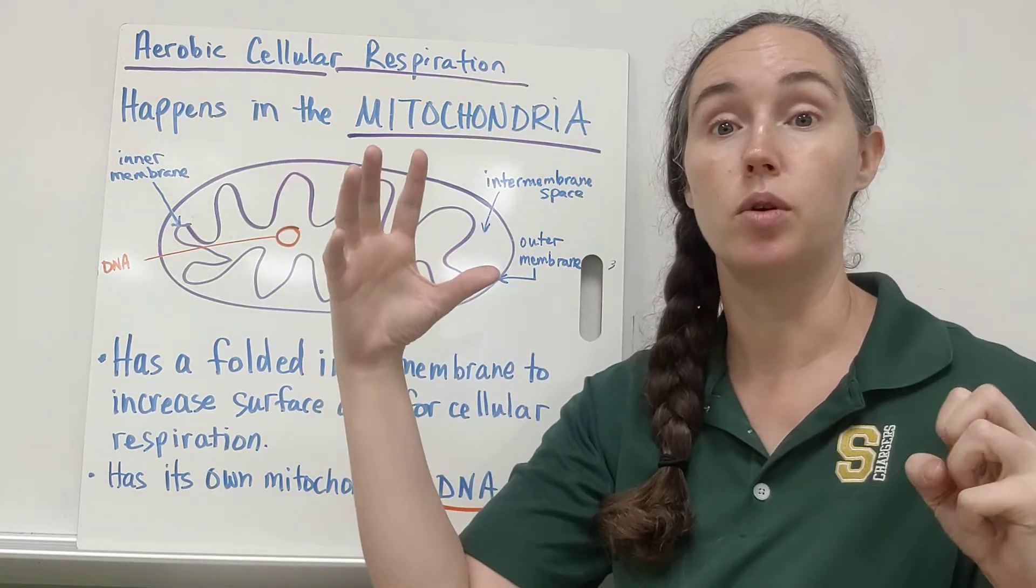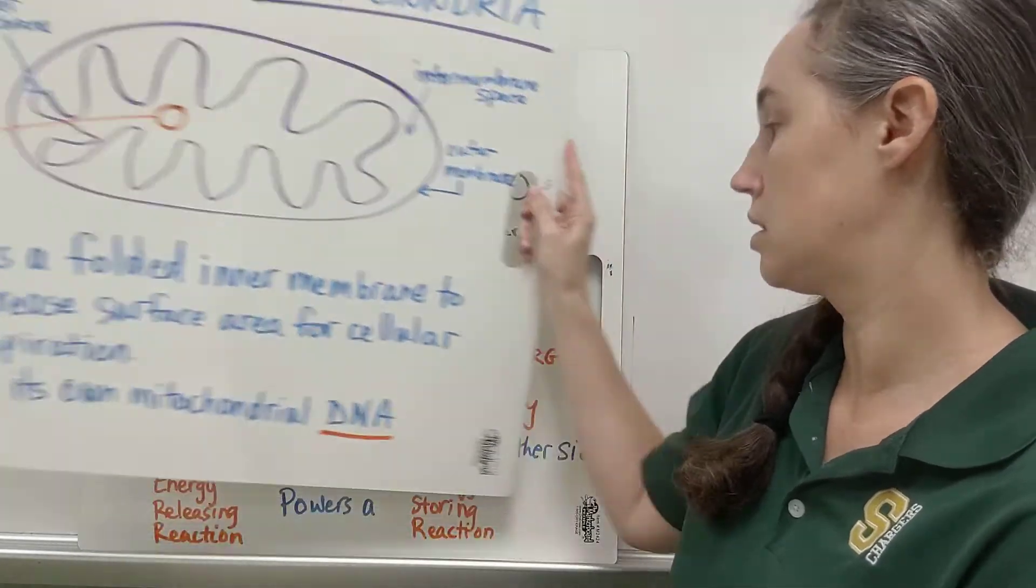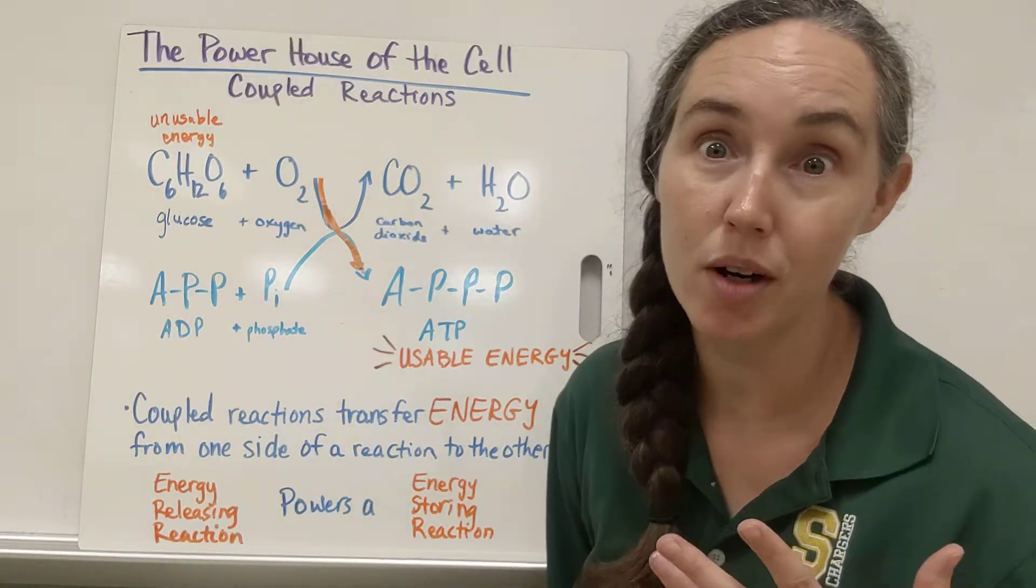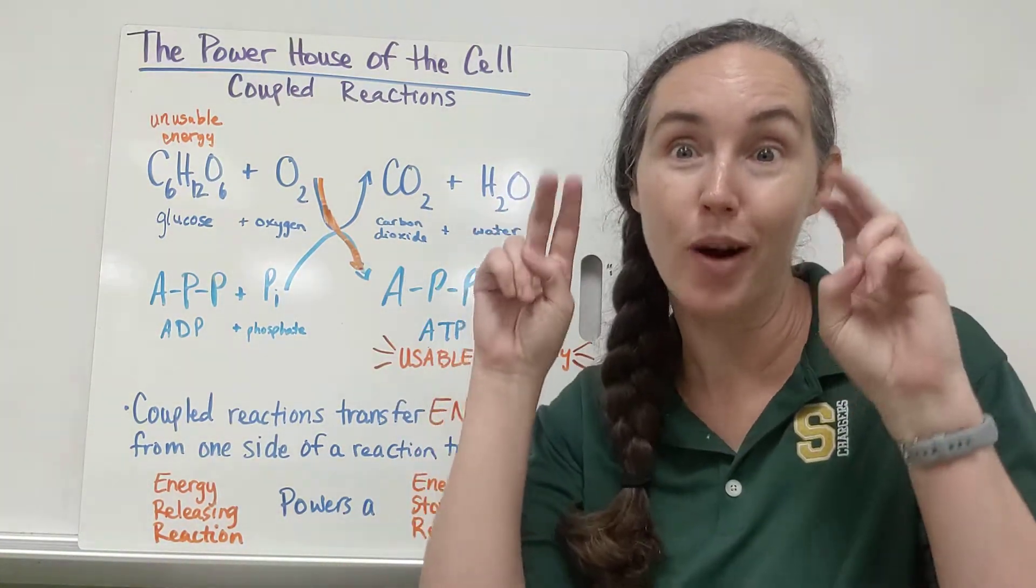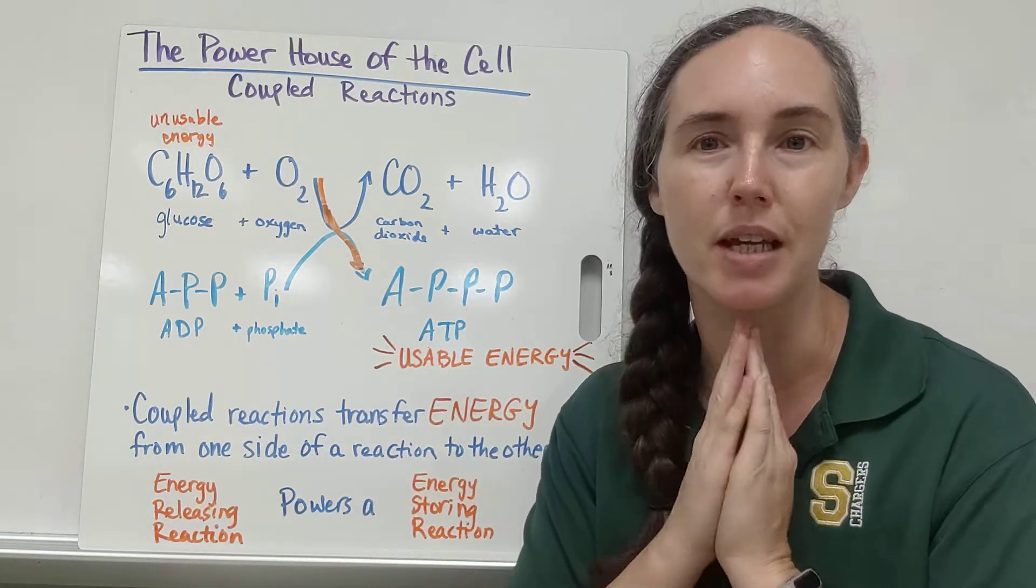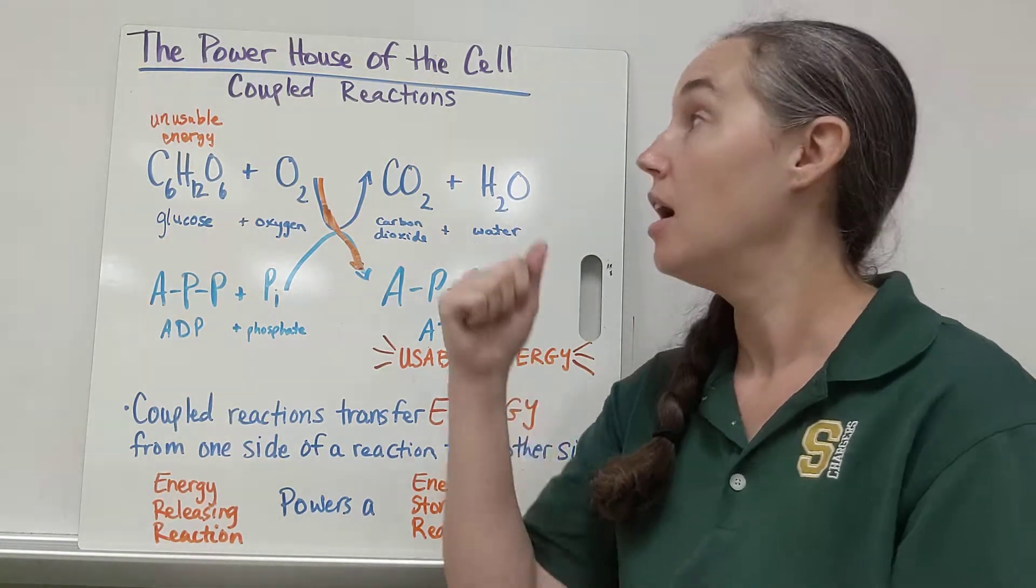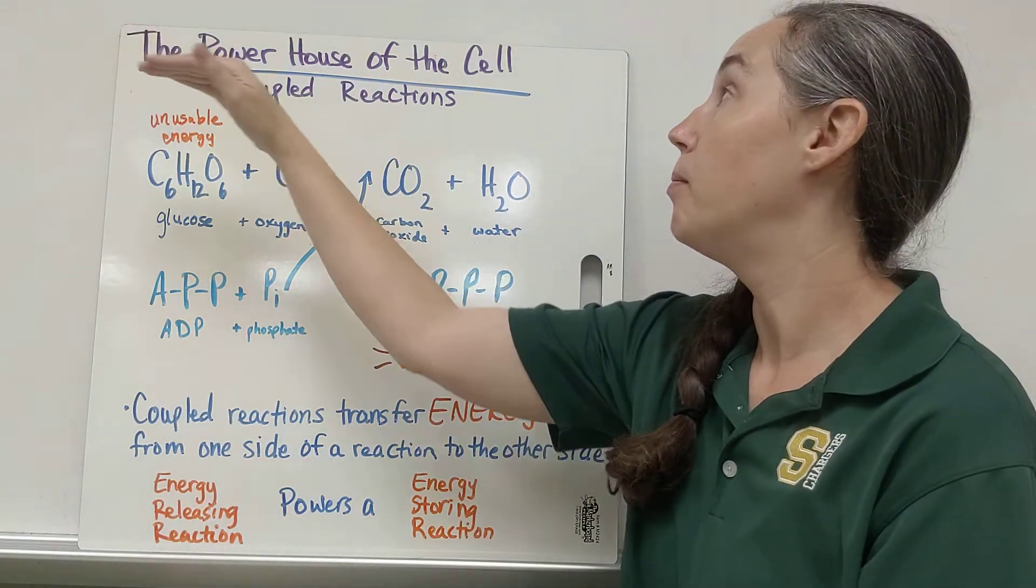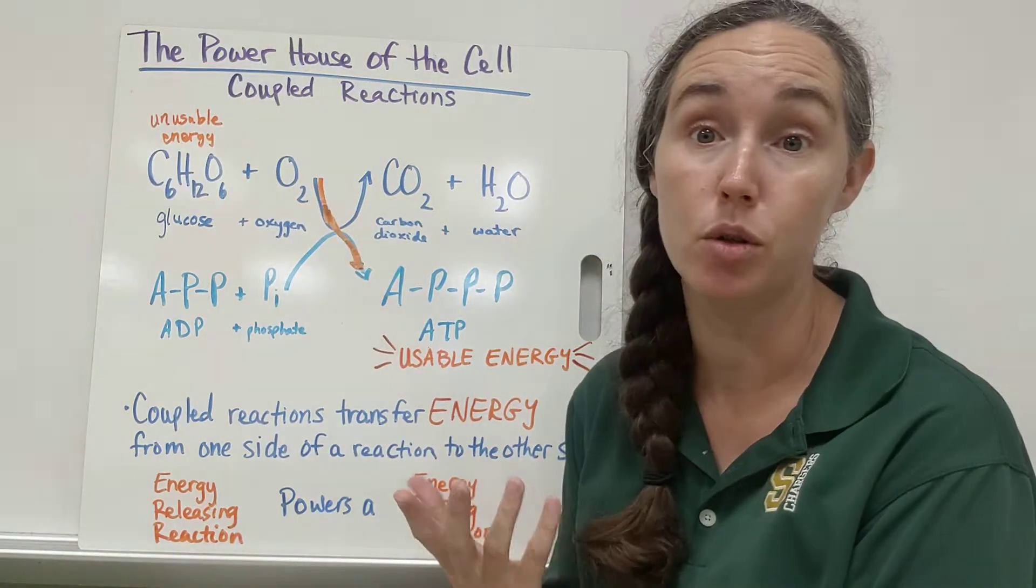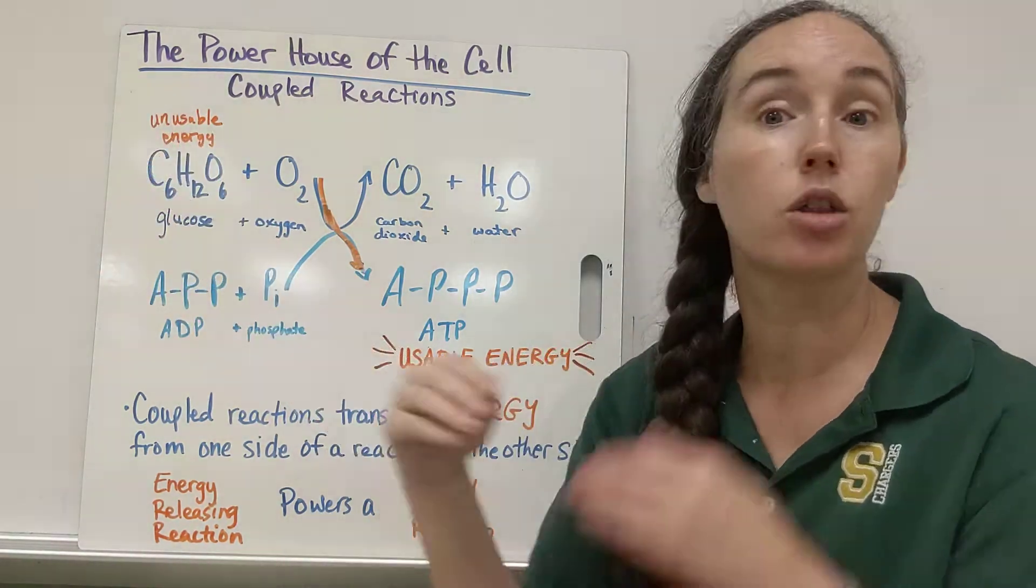So everyone calls mitochondria the powerhouse of the cell, which makes my eyes roll because sometimes we don't really know what that means. But what it actually means is what's happening in the mitochondria is we're taking energy that we can't use, glucose from our food, and transforming it through a series of many, many reactions into ATP, a form we can use.